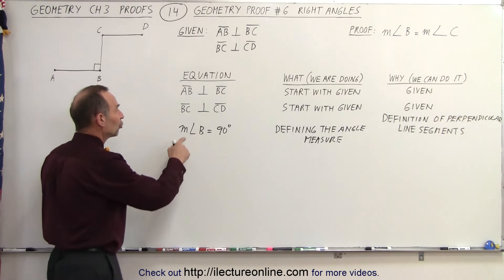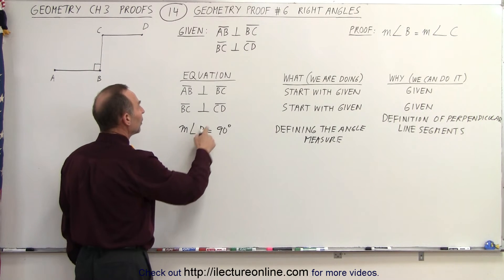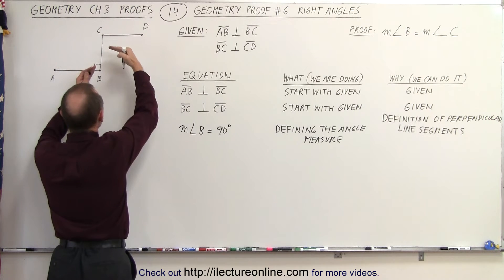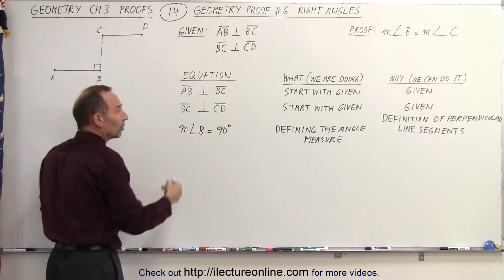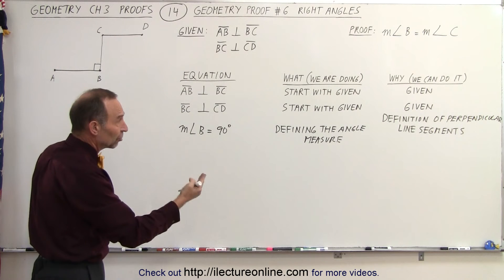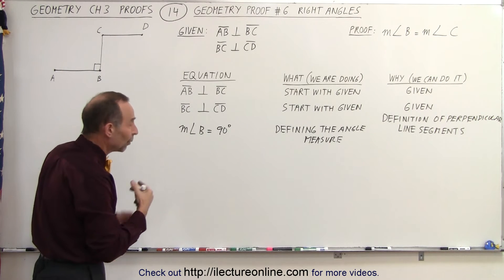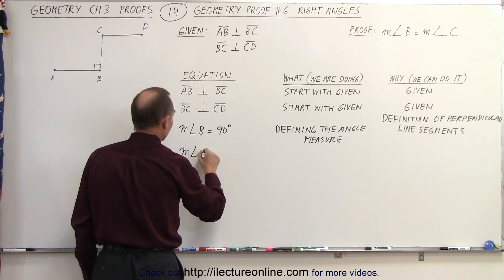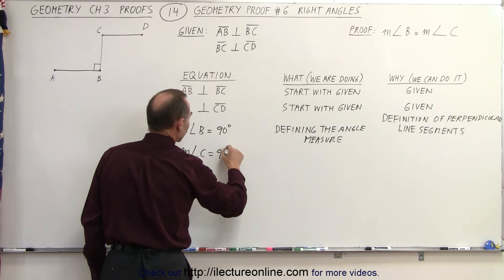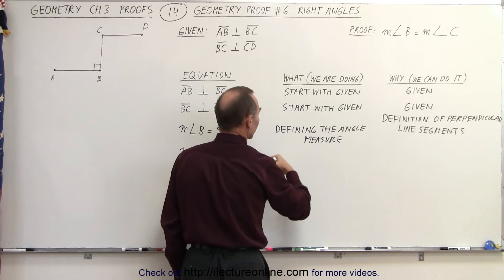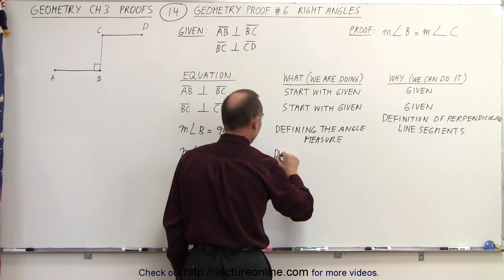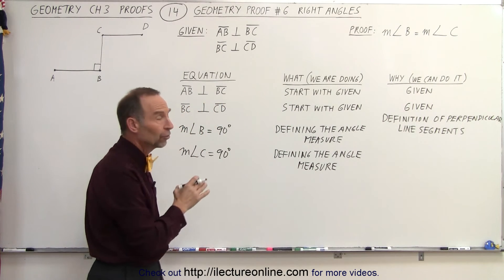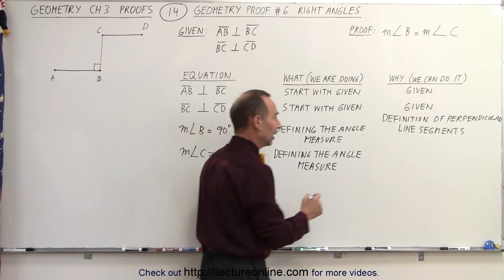If that is true for the measure of angle B, we can make the same statement for the measure of angle C. We have two line segments that meet; they are perpendicular to one another. By the definition of perpendicular line segments, they form an angle equal to 90 degrees, or a right angle. So the measure of angle C is also equal to 90 degrees.